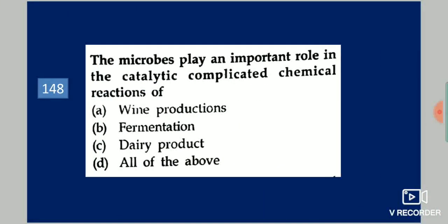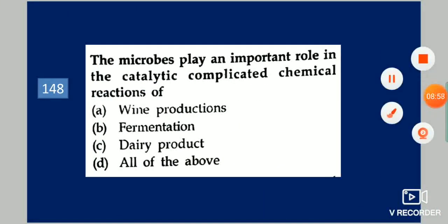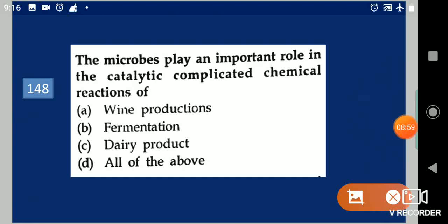Next question: Microbes play an important role in the catalytic complicated chemical reactions of dash. Your options are: wine production, fermentation, dairy products, or all of the above. Your answer is all of the above.